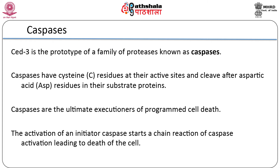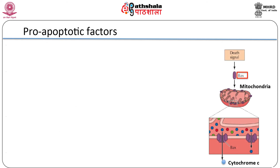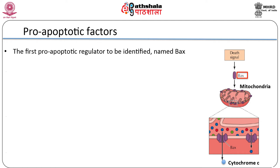Activation of caspases appears to be a common feature of most programmed cell death. Pro-apoptotic regulators promote caspase activation; CED9 and BCL2 suppress the cell death pathway. The first pro-apoptotic regulator to be identified was BAX, found associated with BCL2 in extracts of cells expressing high levels of BCL2. Sequence analysis demonstrated that BAX is related in sequence to CED9 and BCL2.